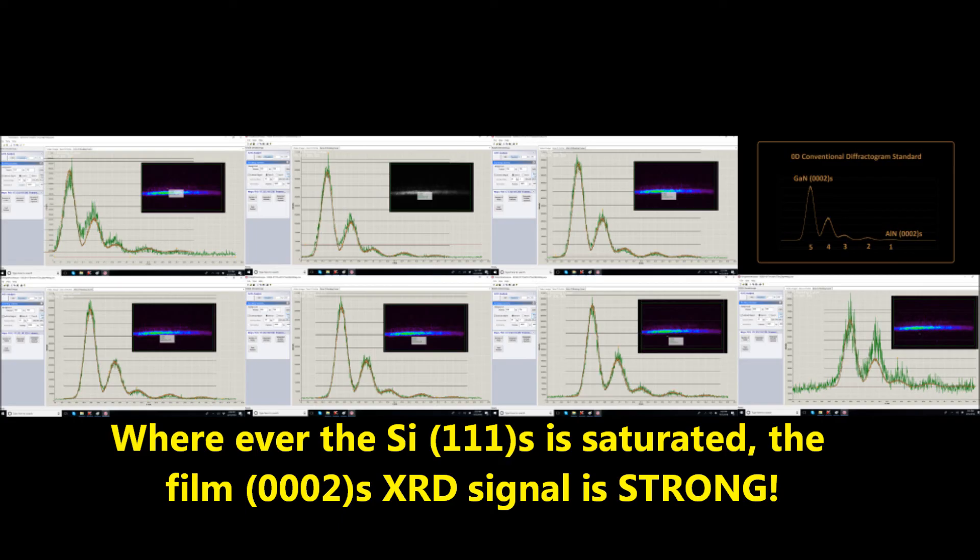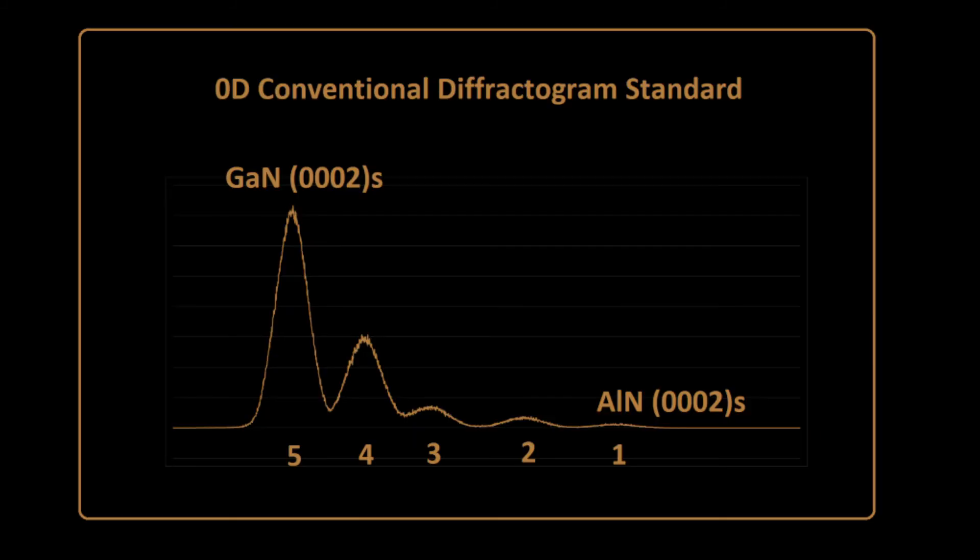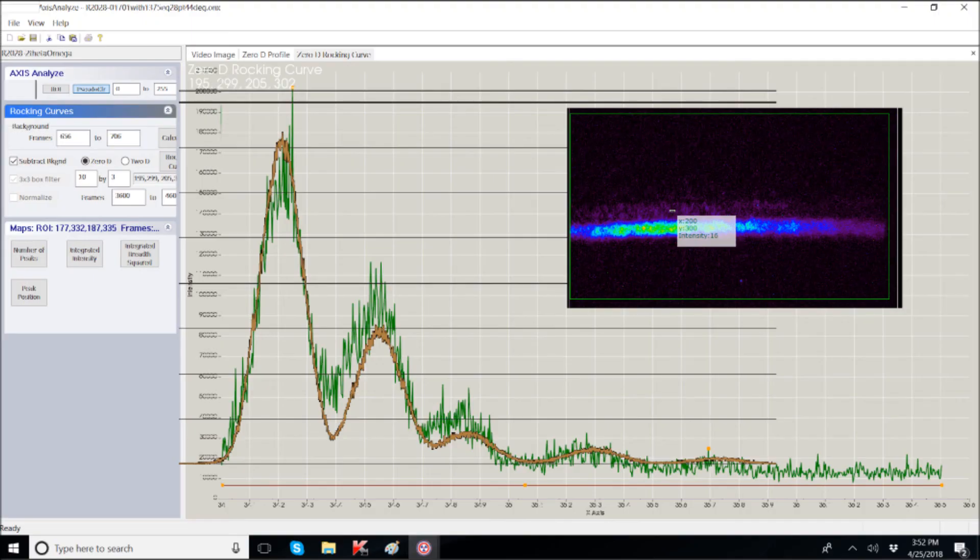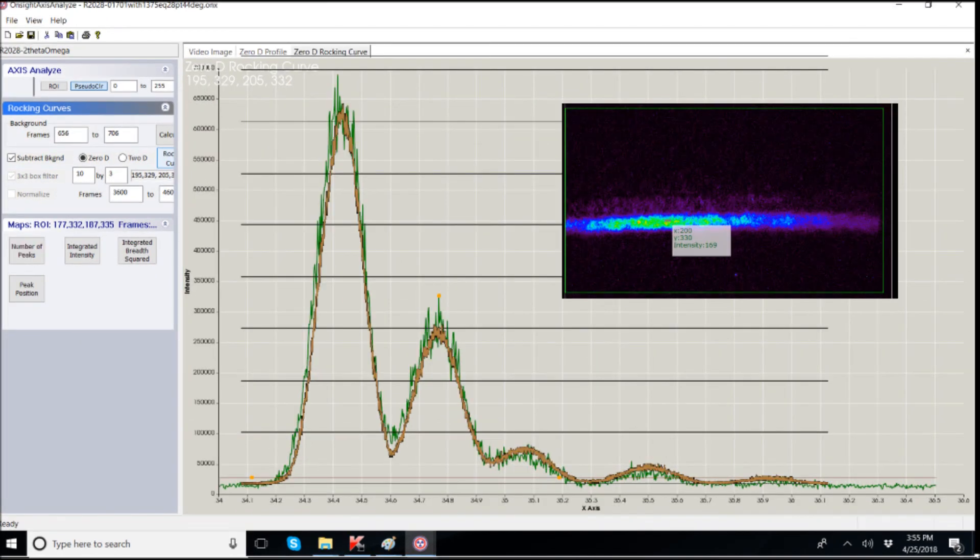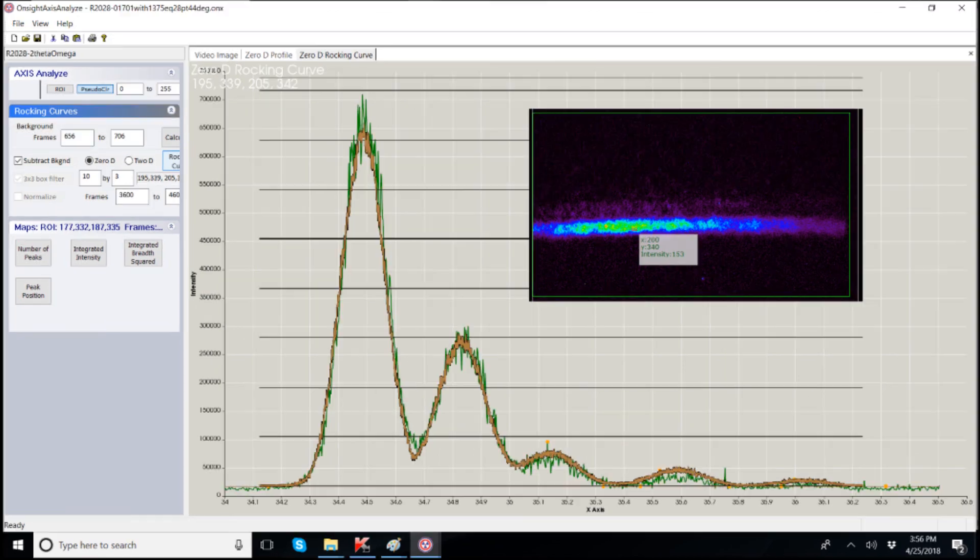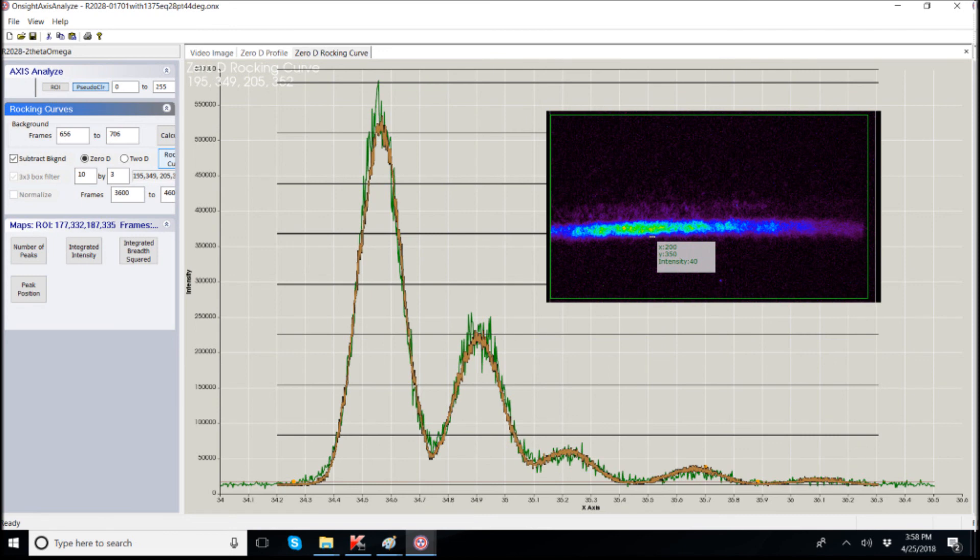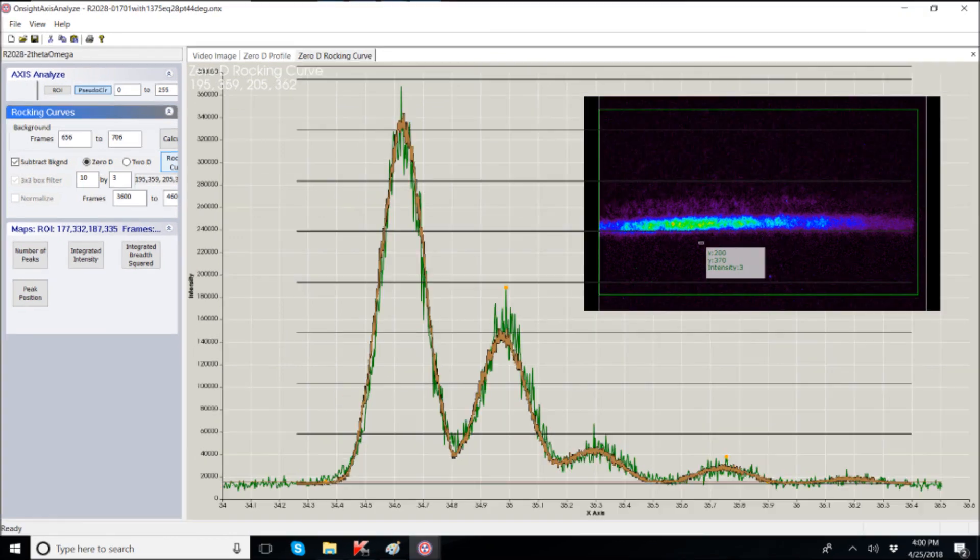A quick review of the region under the saturated pixels in the image shows a fairly good fit with our conventional 0-D standard rocking curve profile and is indicative of uniform film thickness.